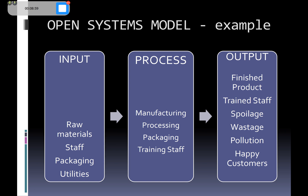So the output has to be different from what was put into the company at the beginning. You've got your manufacturing process, the processing itself, the packaging, training staff, and probably many other things under that category. This is really just to give you a feel for what's actually happening in the model. Your outputs are your finished product, and if you're providing training to your staff as part of your process, then having trained staff at the end is also an output.